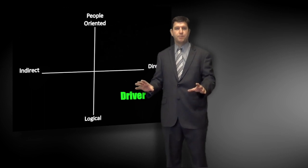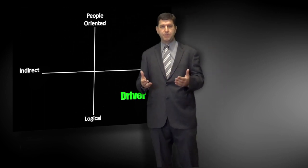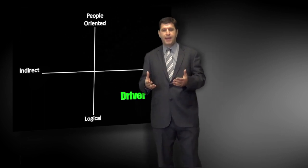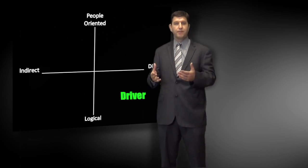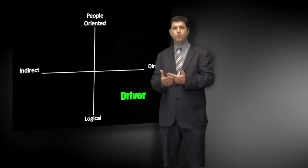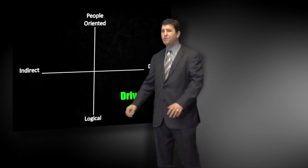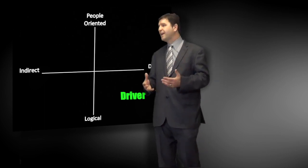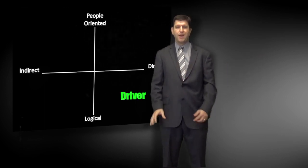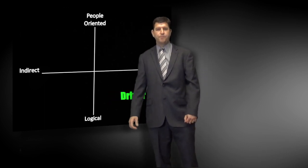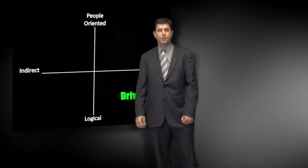One quick piece of caution on determining where you fall on this chart: a lot of times folks will put where they've trained themselves to be over 5, 10, or 15 years, especially if they've moved into a career. Say somebody has become an attorney or accountant — as a result of that career choice, they've forced themselves to be more logical or detail-oriented. A good way to determine your natural temperament is to think back to where you were in high school. Those of us who figure out how to get along with people tend to move our dots closer to the center over time, but what we're looking for is your natural spot.